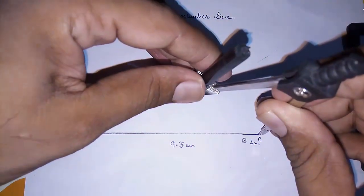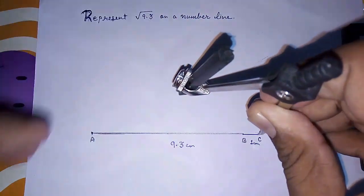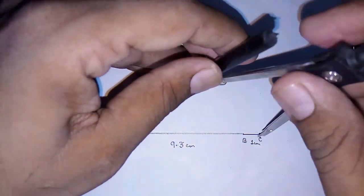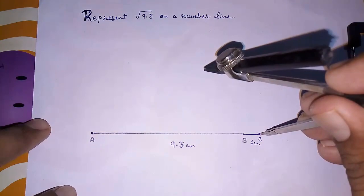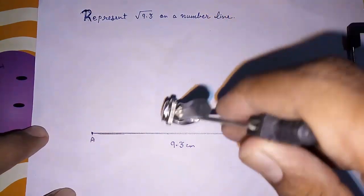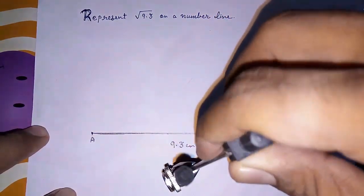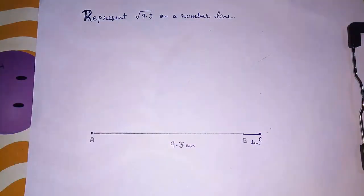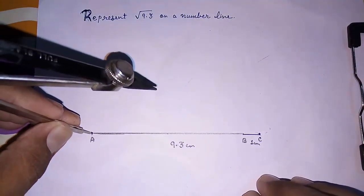We have to take more than half. When we want to draw a perpendicular bisector we are using more than half. So with the help of this we are going to find the midpoint.